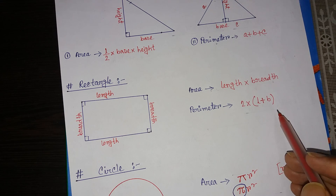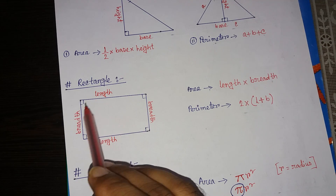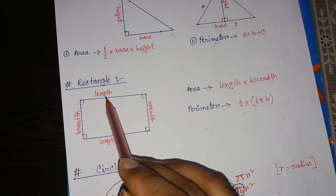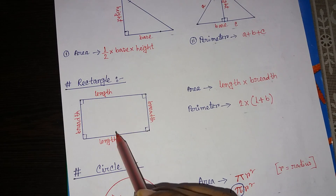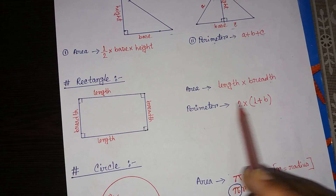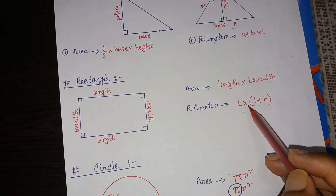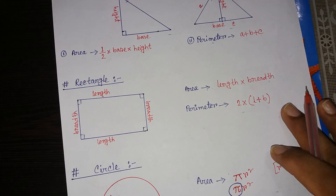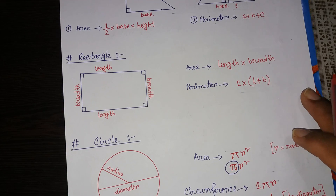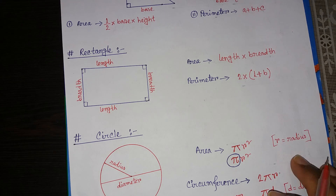The perimeter of a rectangle equals 2 multiplied by the bracket L plus B, where L represents length and B represents breadth. If we add the four sides we get the perimeter. There are two lengths and two breadths, that's why we multiply 2 into L plus B.